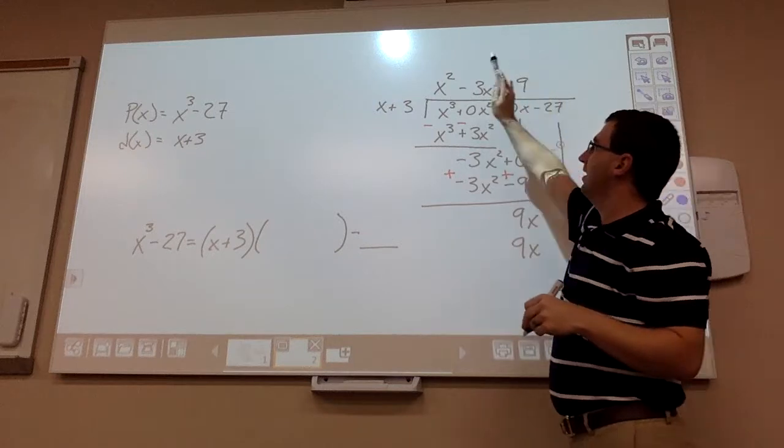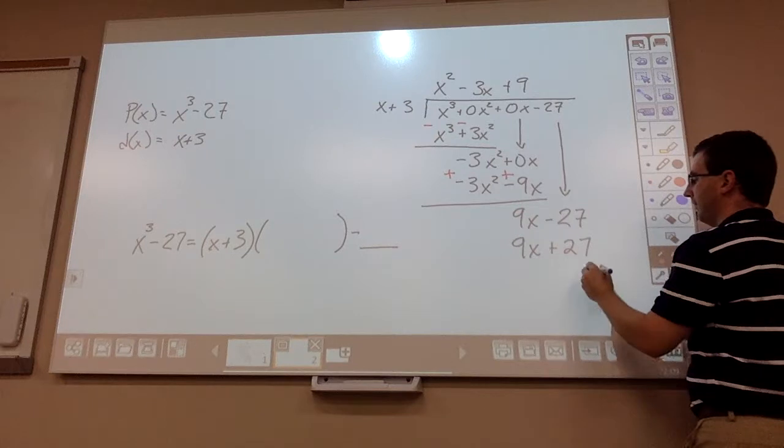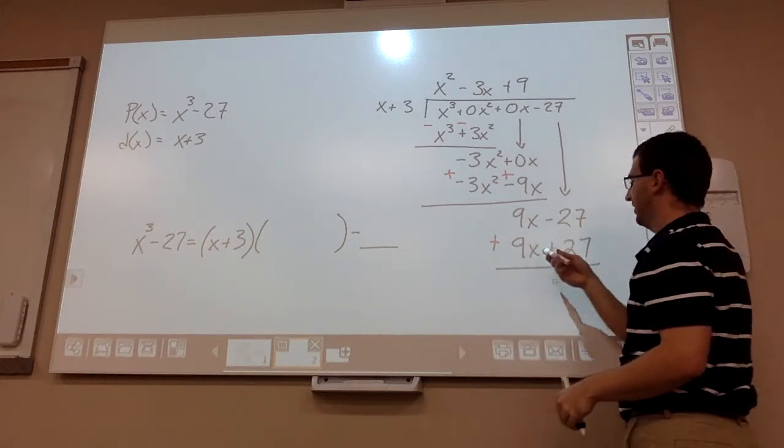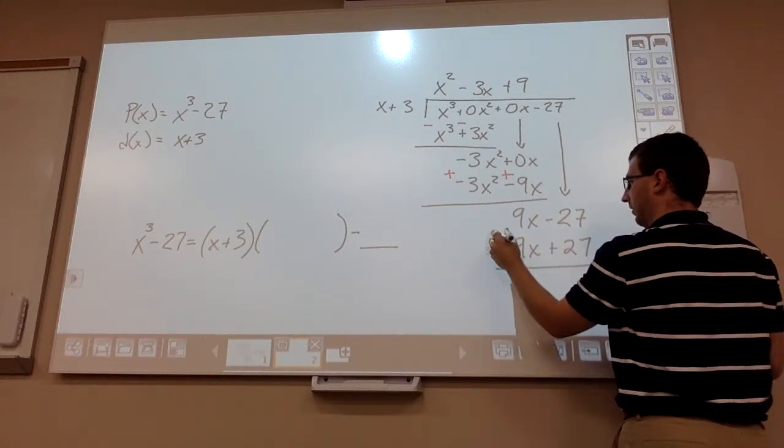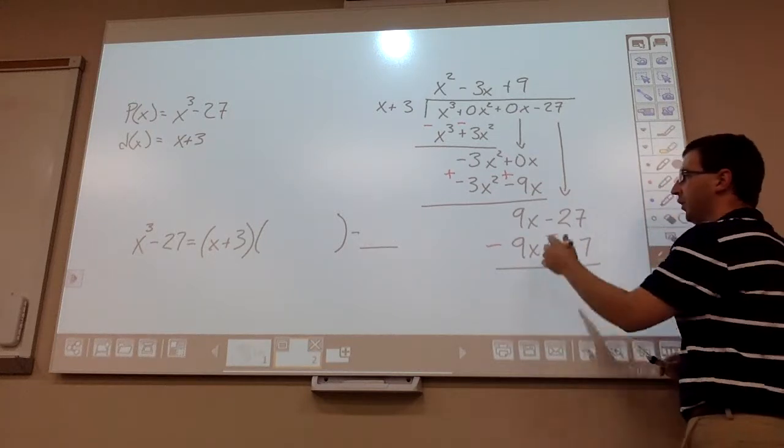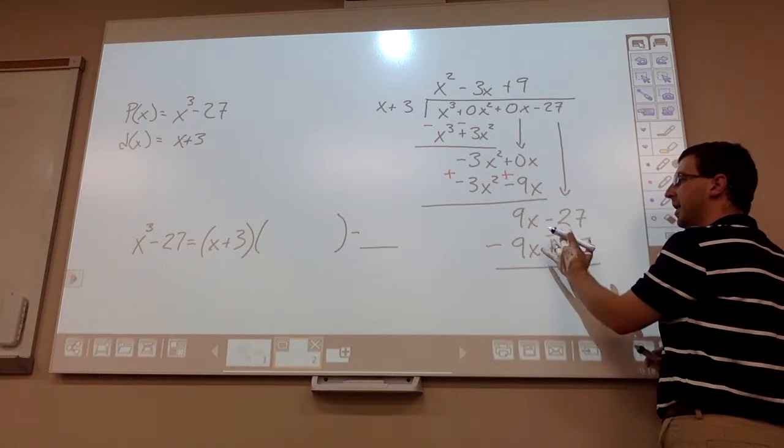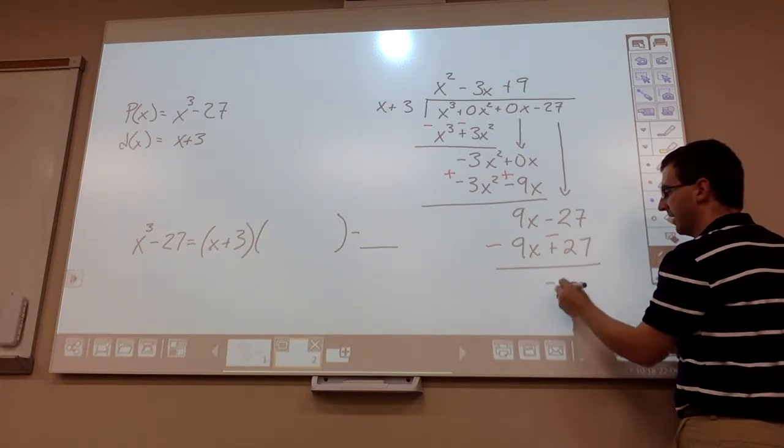And 9 times 3, well that should give you a positive 27. So same process as earlier. Change your signs. So your 9x's cancel out. And here you have -27 - 27, well that should give you -54.